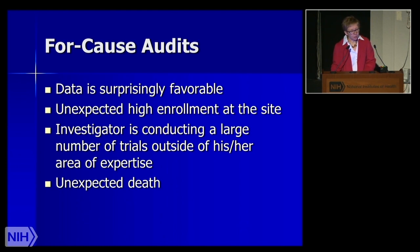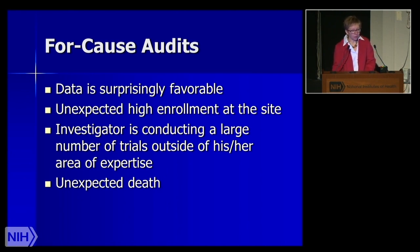For-cause audits raise the hairs on the back of your neck, because you don't want one. They're usually related to sites that, compared to everyone else participating in a study, are having surprisingly favorable results — which might flag a for-cause audit. Unexpectedly high enrollment versus others, an investigator conducting a large number of trials outside their area of expertise, or an unexpected death or deaths at a particular site may also trigger a for-cause audit.